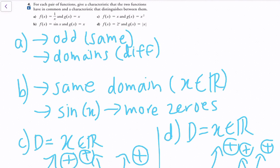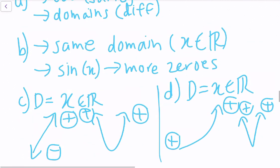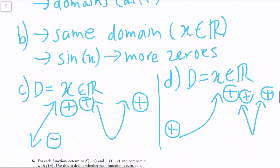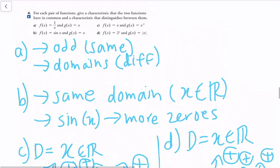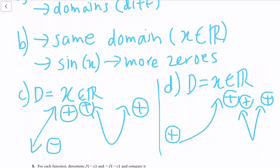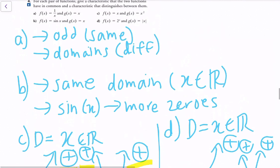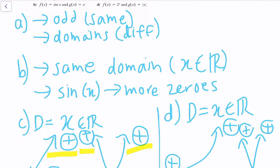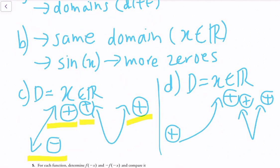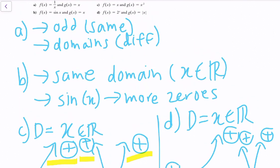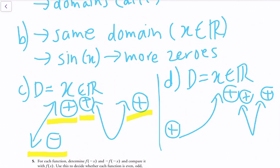For part C: f(x) = x and g(x) = x² share the same domain of all real numbers, but their end behavior differs. For f(x) = x, as x increases y approaches positive values and as x decreases y approaches negative values. For g(x) = x², whether x increases or decreases, y always approaches positive values. For part D: f(x) = 2^x and g(x) = |x| both yield positive y values, though 2^x keeps increasing while |x| is symmetric.